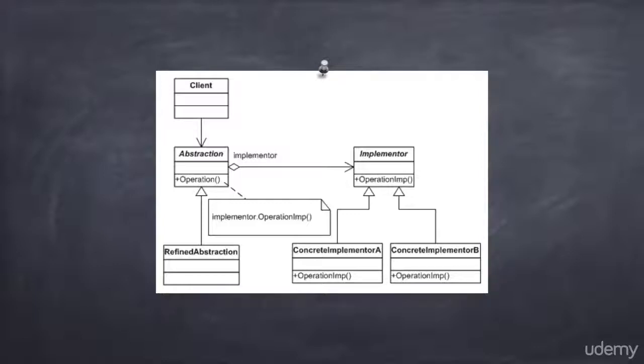And on the right is the implementation hierarchy. The top-level class is called Implementor and it implements some kind of abstract low-level API. In the diagram, the API consists of a single method called Operation-IMP. There are also two concrete implementation classes called ConcreteImplementor-A and ConcreteImplementor-B. These two classes derive from the implementor base class and implement the low-level interface.